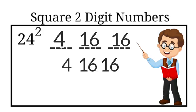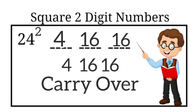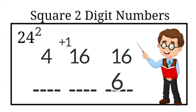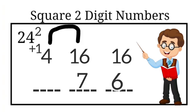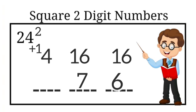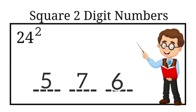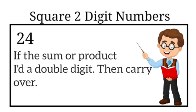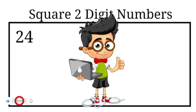The answer as written is too large, so we carry over. Starting from the right: the last part is 16, so 6 stays and 1 is carried over. The middle part was 16 plus 1 carried over equals 17 — so 7 stays and 1 is carried over. The first part was 4 plus 1 carried over equals 5. So the final answer is 5-7-6, which is 576. In short, if any part gives a two-digit result, carry over — except for the first part, which you write as-is.